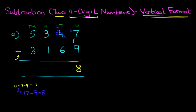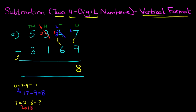Now we're going to do the tens. For the tens, we've got 3 minus 6. 3 minus 6 — well, again, we cannot do this because 3 is smaller than 6. So we're going to take 1 from the hundreds column. So let's cross out the 3. 3 minus 1 is 2. And the 1 we have taken from here, we're going to add it to the tens column. Therefore, the tens has now become 13 minus 6. 13 minus 6 is 7. So we can write that down, 7.